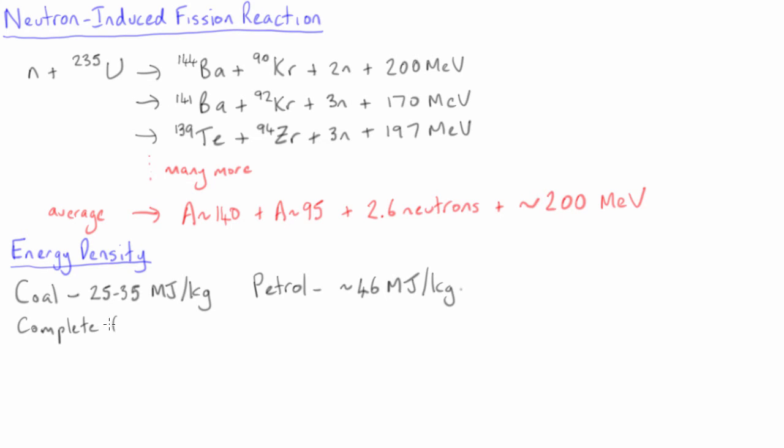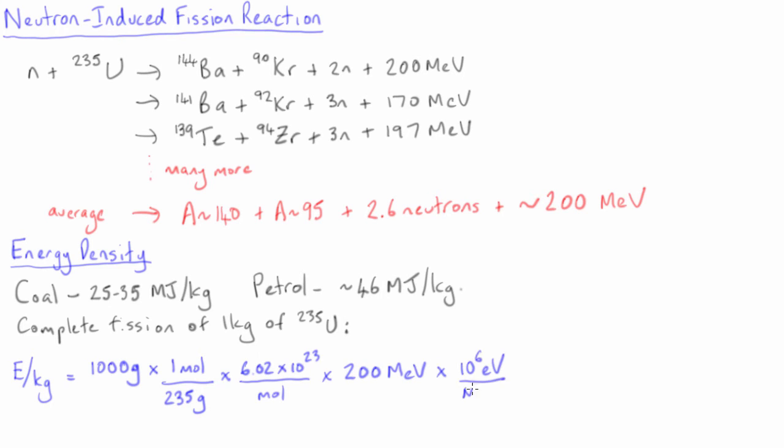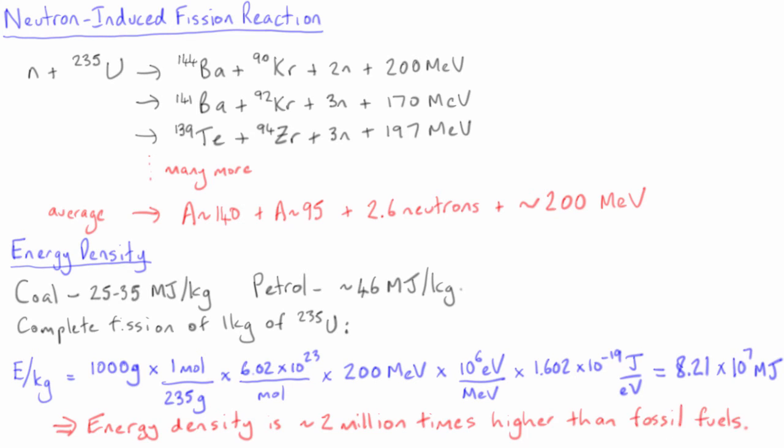In comparison, the complete fission of 1 kg of uranium-235 releases huge amounts of energy. We can estimate this amount by working out the number of atoms in 1 kg of uranium and multiplying it by 200 MeV for each fission. This results in an energy release of 82 million MJ. This means that the energy density of uranium-235 is around 2 million times higher than that for fossil fuels.